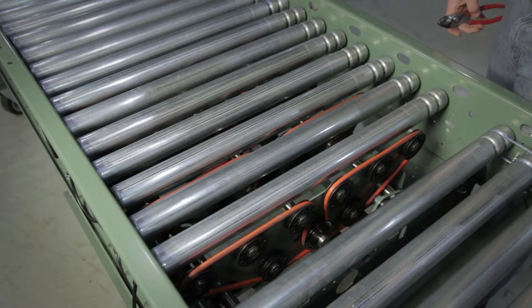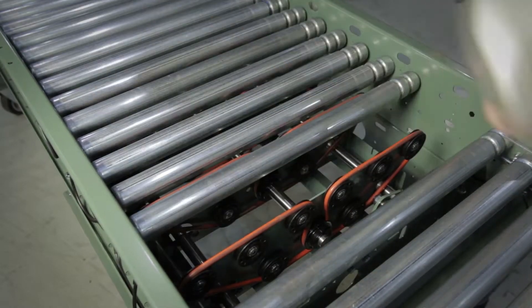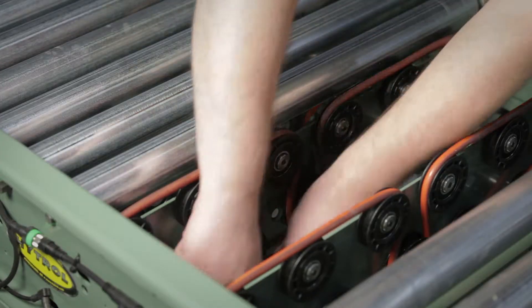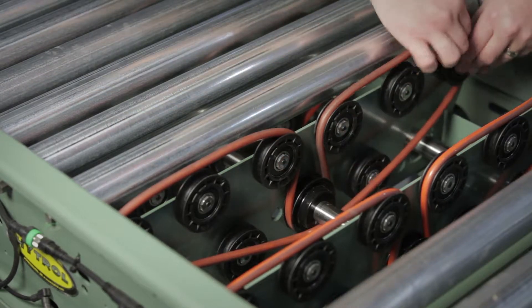To remove an o-ring, follow proper lockout tagout procedures and remove the rollers at the top of the transfer. Detach the o-ring beginning with the bottom idler shift.